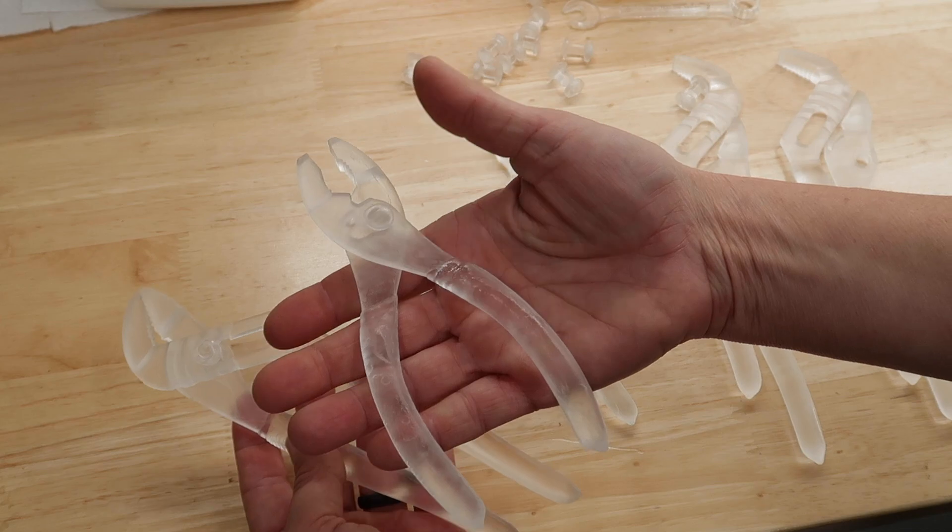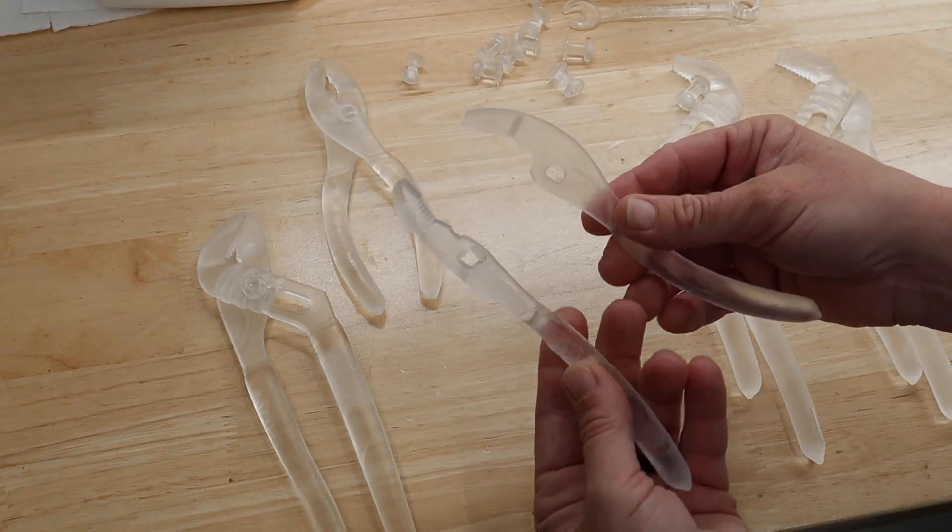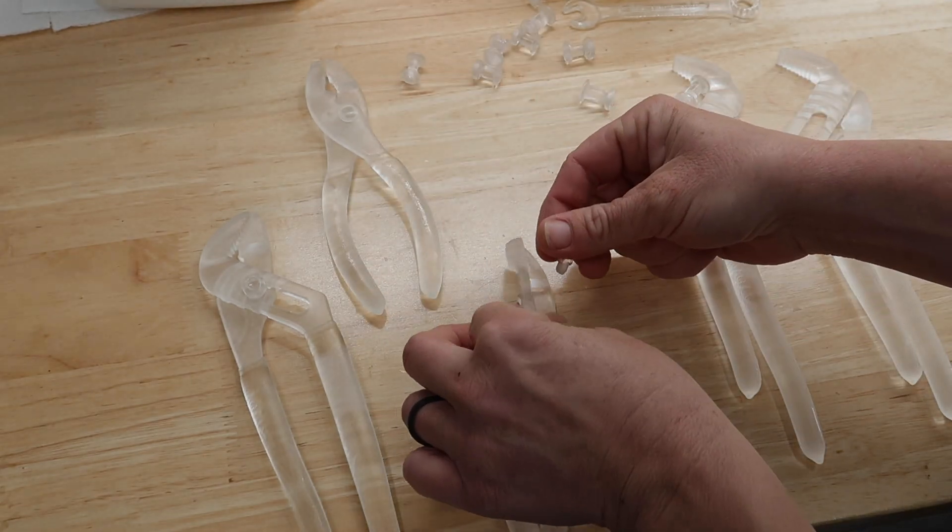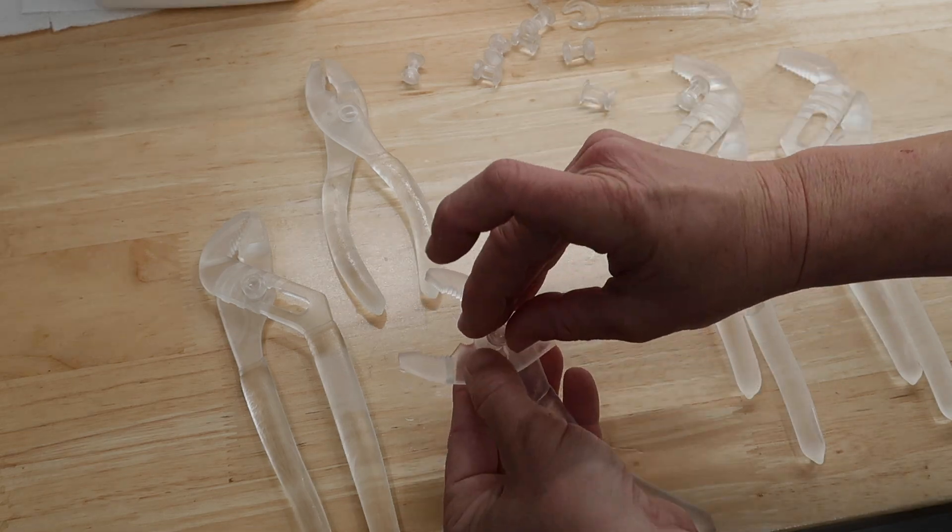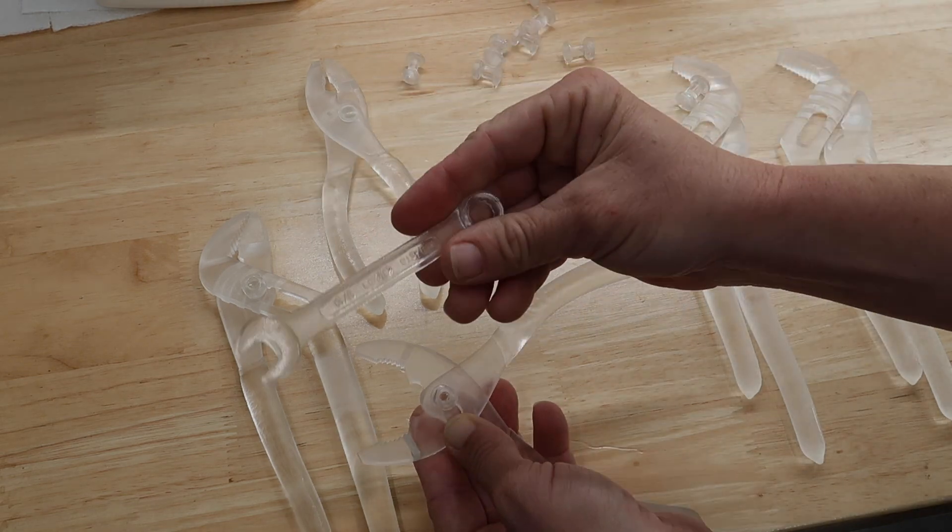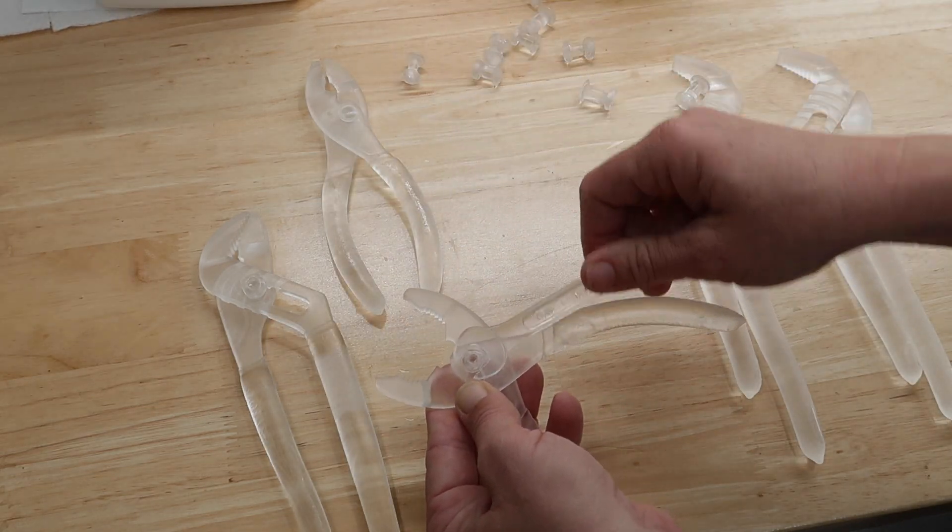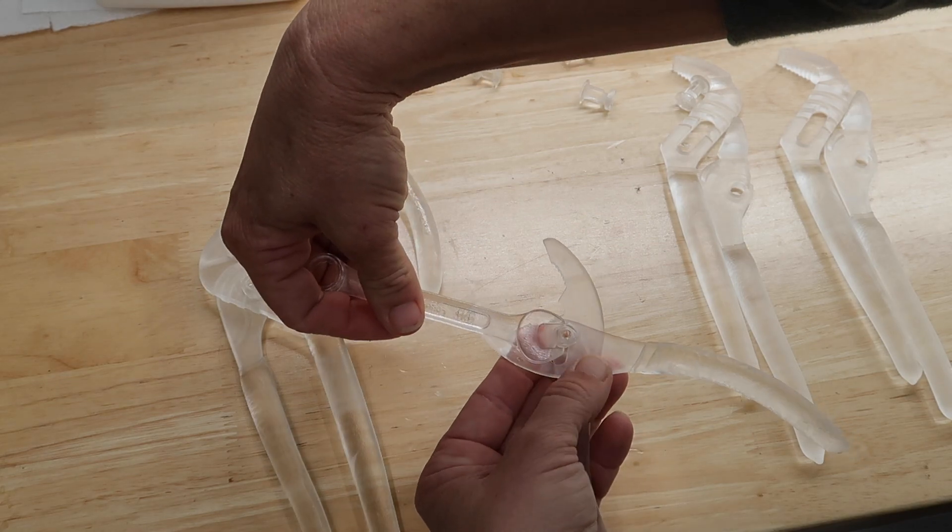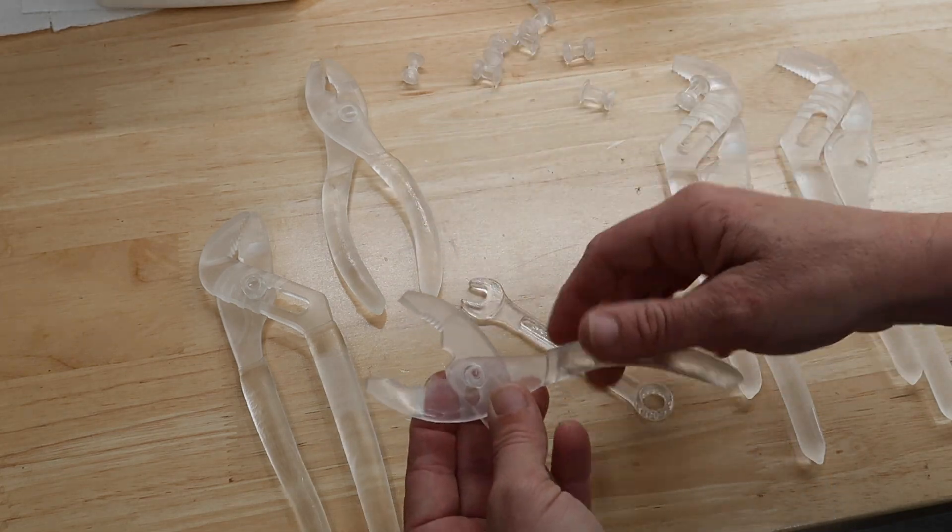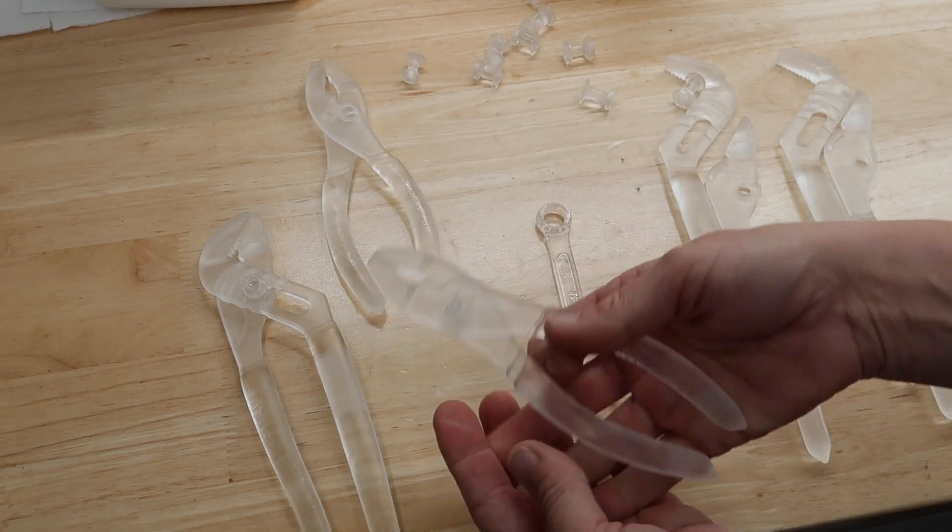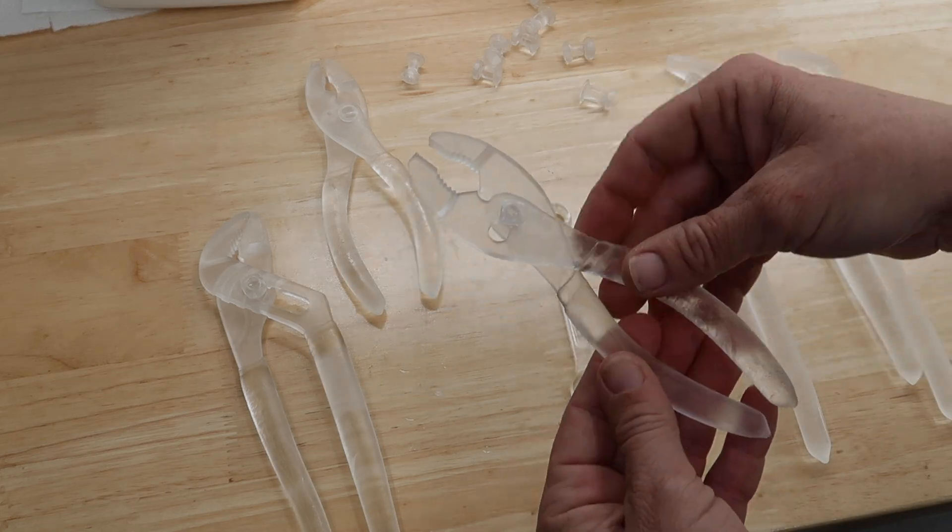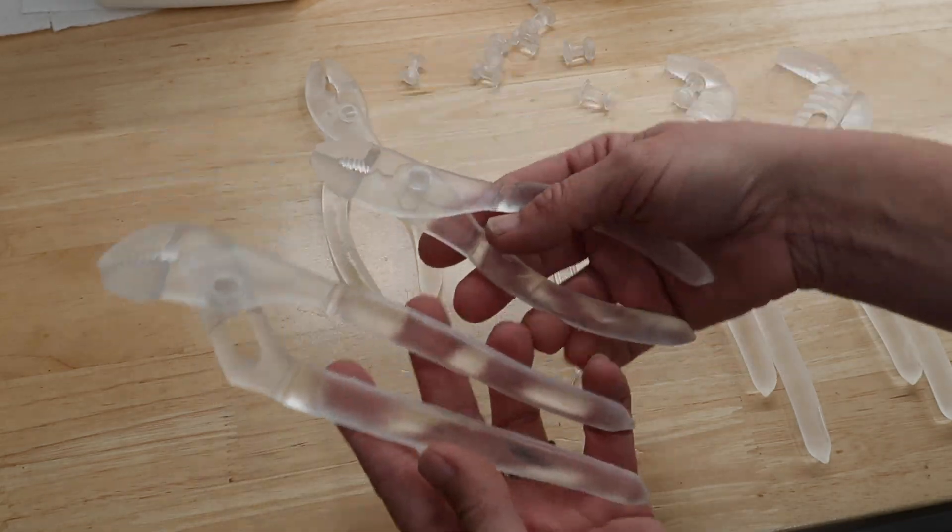The epoxy pliers to tighten that bolt. Perfect. Now let's assemble one of these. The threads came out so nice on these little screws. Nice, we'll use my three-eighths inch wrench to tighten this guy down. Nice.